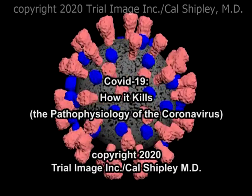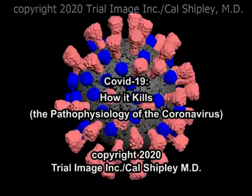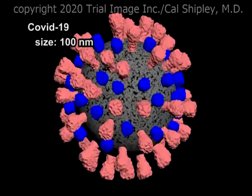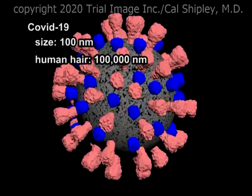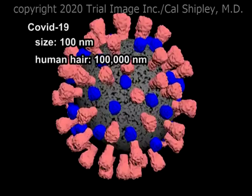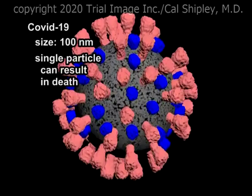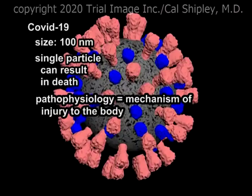This is Dr. Cal Shipley presenting COVID-19: How It Kills — the Pathophysiology of the Coronavirus. COVID-19 is a viral particle which is a mere 100 nanometers in diameter. By comparison, the diameter of a human hair is 1,000 times greater. And yet, in spite of its diminutive size, a single particle can infect a human being and result in death. In this presentation, I'm going to examine the mechanism, or pathophysiology as we call it in medicine, by which this virus wreaks such havoc.